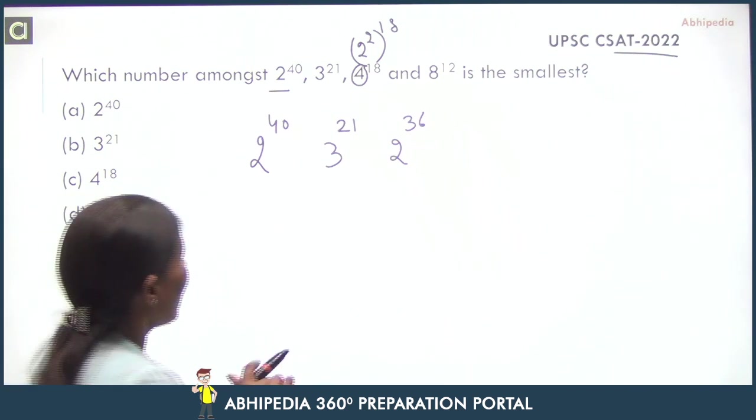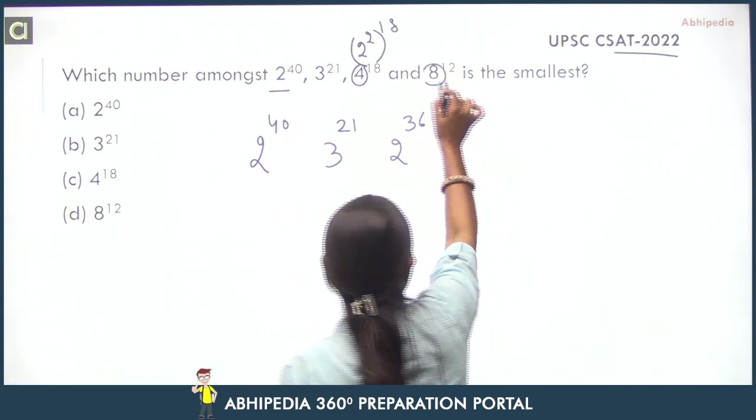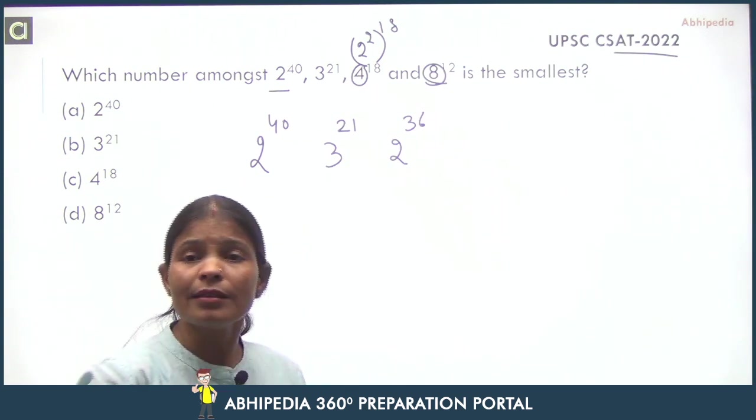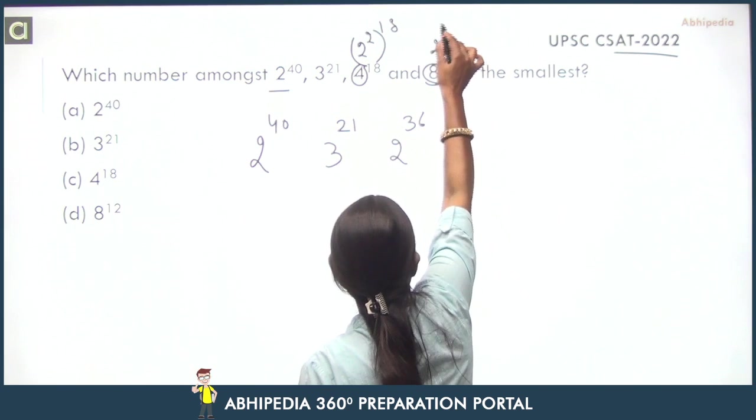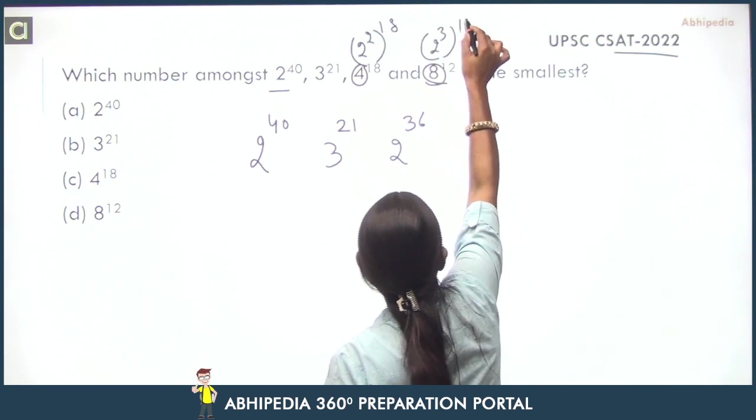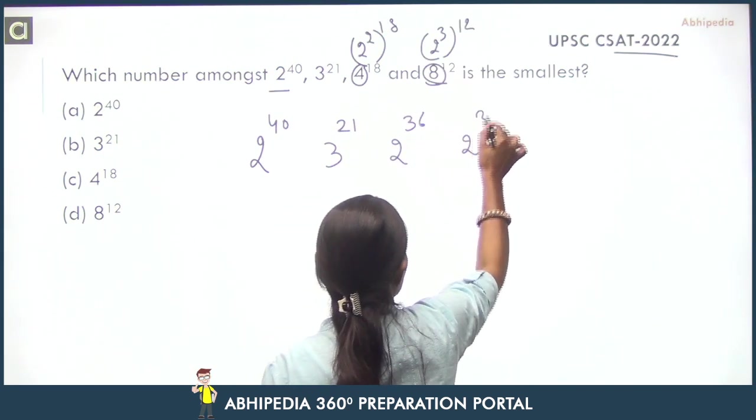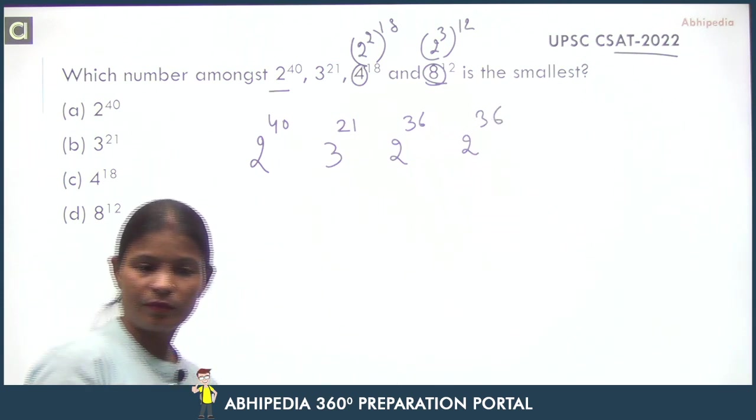Clear? Now this is 2 raised to power 3, so this is 2 raised to power 12, then again this is 2 raised to power 36. Clear?